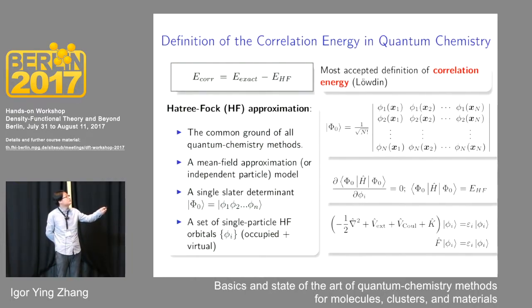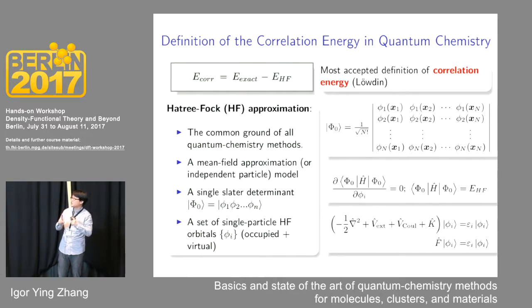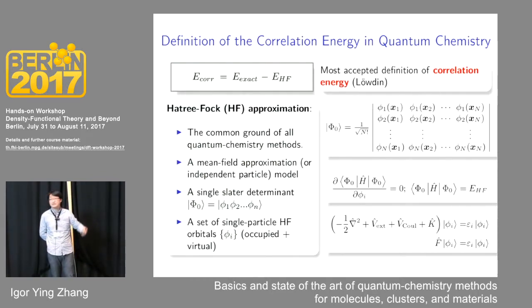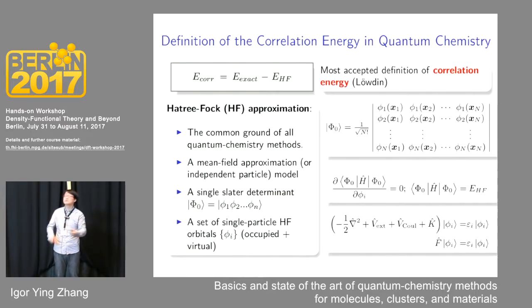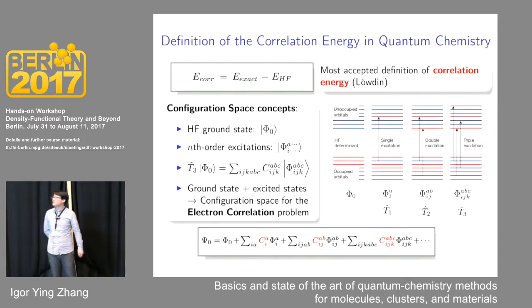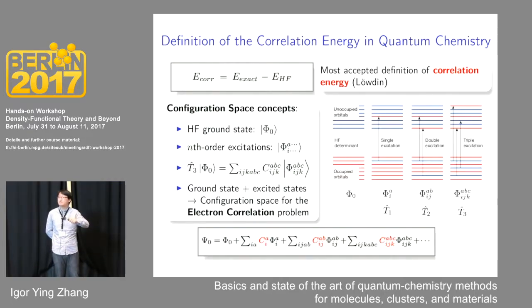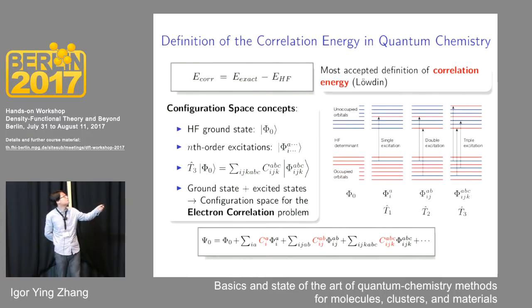These orbitals are determined by minimizing the energy, resulting in the Hartree-Fock single-particle equation with the well-known Fock operator. Since Hartree-Fock theory is a mean-field approximation, it completely misses the subtle instantaneous electron-electron interactions. This leads to the most accepted definition of correlation energy: the difference between the exact energy and the Hartree-Fock energy. With this definition, it is natural to develop quantum chemistry correlation methods on top of the Hartree-Fock approximation, leading to the key concept of configuration space.